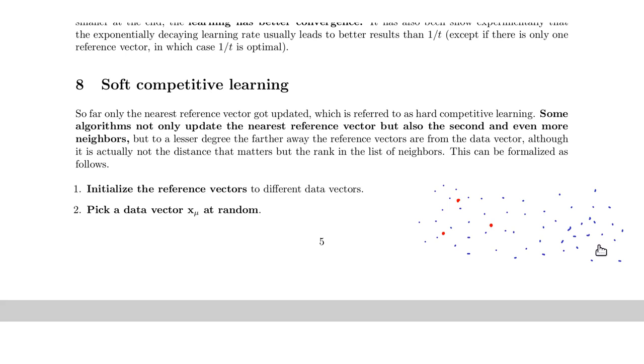And you would move this winner towards this data point. And in soft competitive learning the idea is that you not only move the winner but you also move the others to some extent. So what we would do is we would move this reference vector, let's say, by one third towards that data point here, but the others are also moved towards that data point. To some extent, right? So maybe here and here.